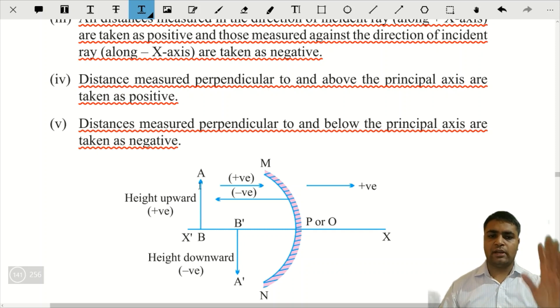Toh height joh rakhengi, upward, positive. Height joh downward rakhengi, that is negative. Or light humare yahan kis taraf padhe yeh? Positive axis ki taraf.